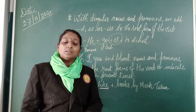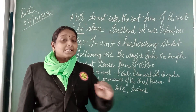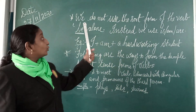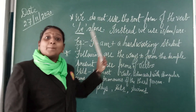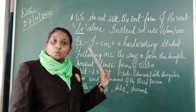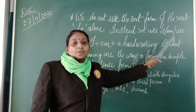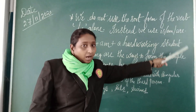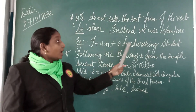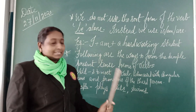Now I will be moving to the next point. We do not use the root form of the verb 'be' alone. Instead, we use 'is' and 'are.' The example is: I am a hardworking student. So in simple present tense we use 'is,' 'am,' or 'are.'